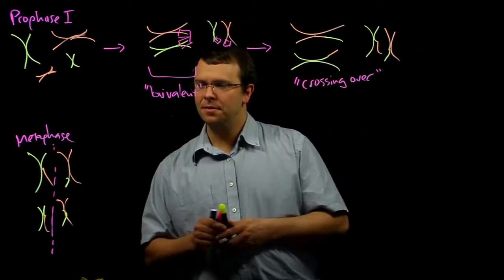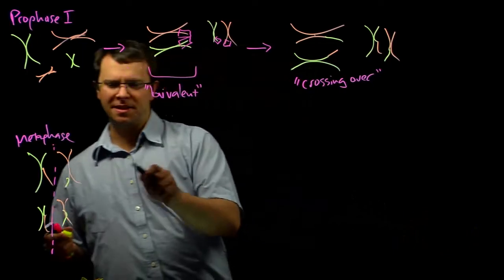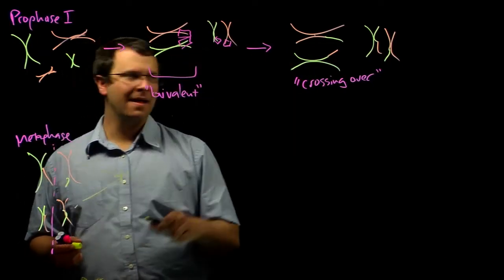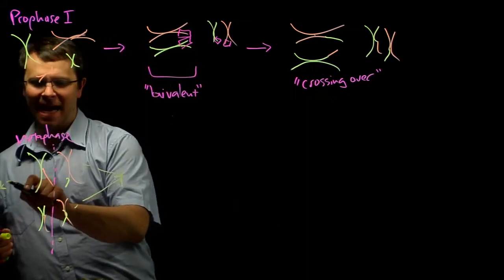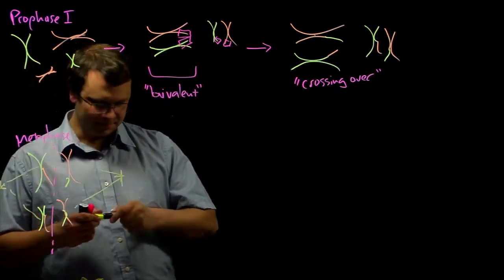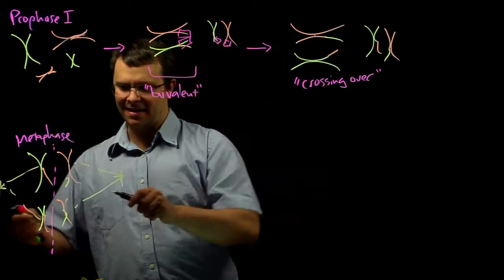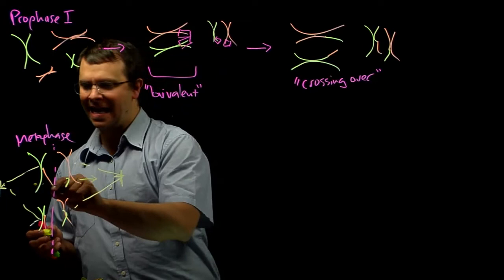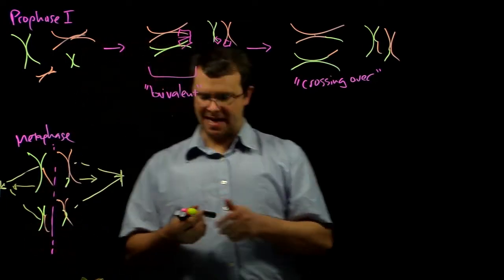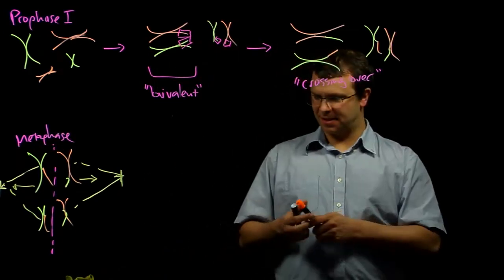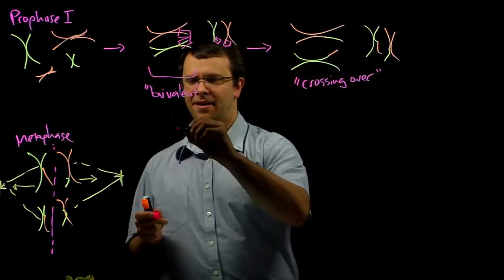And then just as in mitosis, a microtubule organizing center goes ahead and attaches microtubules to those chromosomes, and then those chromosomes start heading towards opposite ends of the cell. This is called anaphase.